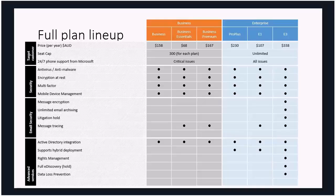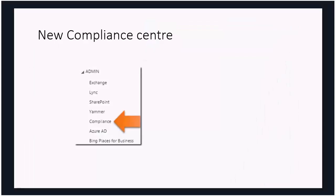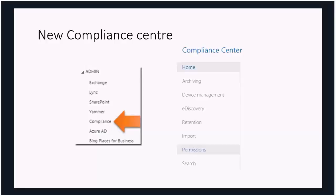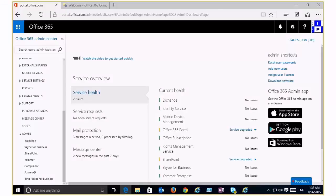To get to the Compliance Center, log into your Office 365 admin portal and in the bottom left-hand corner you'll see an option called Compliance under the Admin section — near Exchange Admin, SharePoint, and so on. That takes you to the new Compliance Center where you can see archiving, device management, eDiscovery, retention, and permissions. Let me swap across to my desktop so you can see this in action.